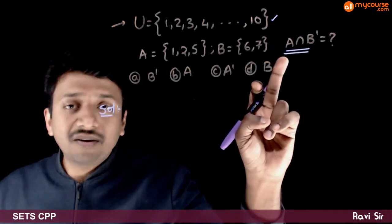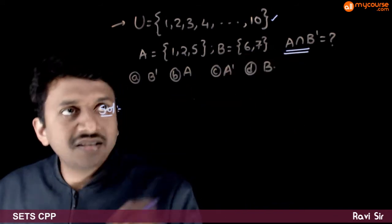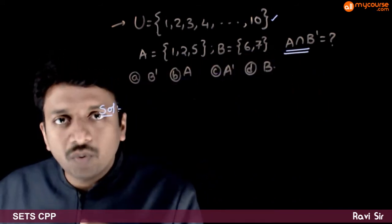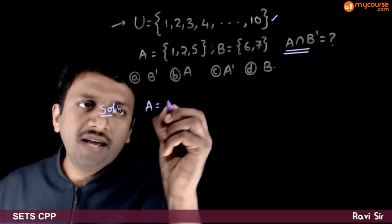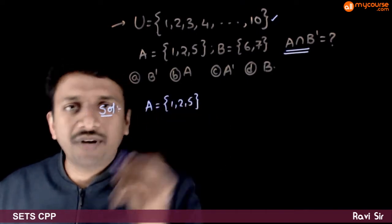First let us find the individual sets. A is very straightforward 1 to 5. A is the set containing 1 to 5.